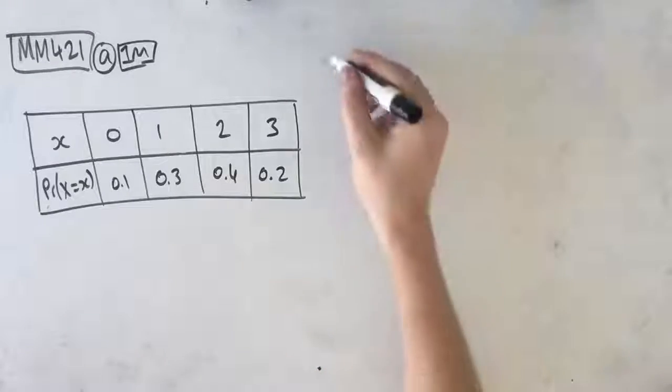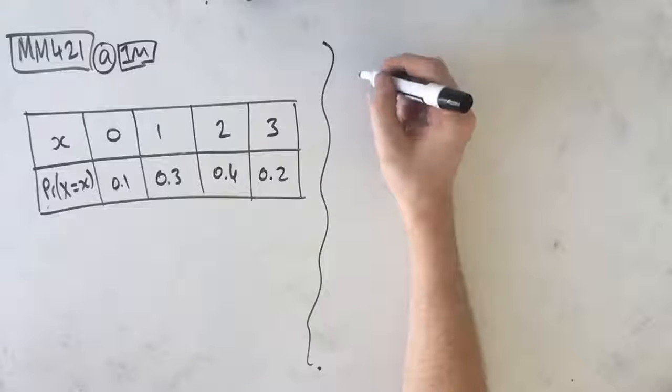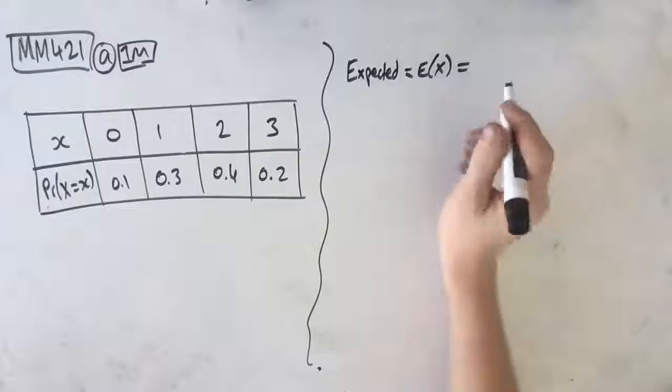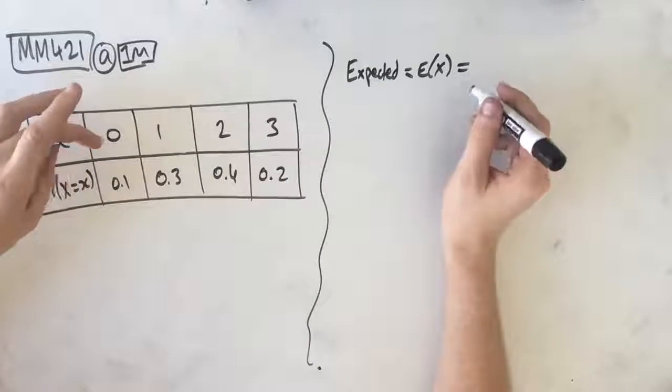So this is just a one-part question. And the key word here is expect. So we're looking for our expected value, which is our E of X, which is the way that we figure this out.